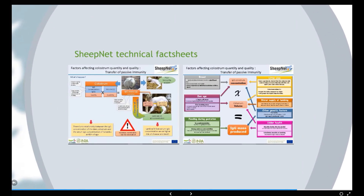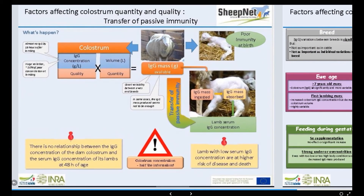Another example of the sort of fact sheets we have is one that gives more information but also has nice diagrams about how you might follow this through to look at improving colostrum quality and quantity, and how you can increase the transfer of passive immunity in lambs. So there are different bits of information about why it's important, how you can change things to bring about differences in quantity and quality, and put some of the main scientific findings from the work done over the last few years into context for how it might be applied on the farm.